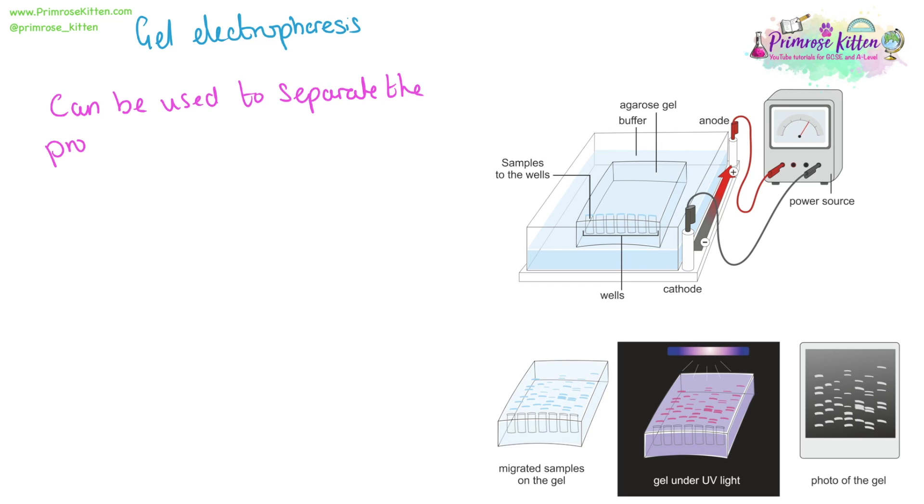Running a sample on a gel electrophoresis can be used to separate the products of PCR. This can be used in genetic fingerprinting, in diagnosis of pathogens or diseases. And in this video, we're going to be looking at how you actually do that.